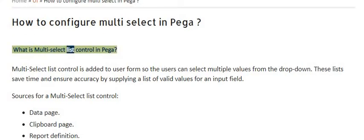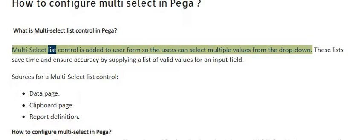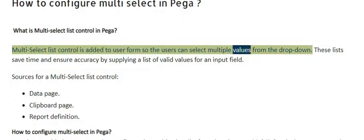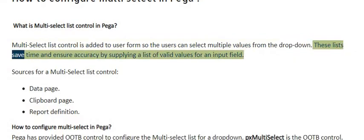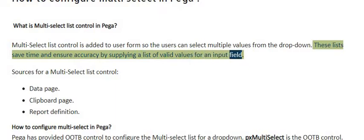Multi-select list control in PEGA is added to a user form so the users can select multiple values from the drop-down. These lists save time and ensure accuracy by supplying a list of valid values for an input field.